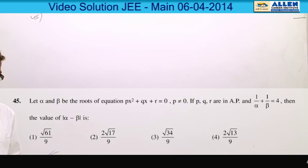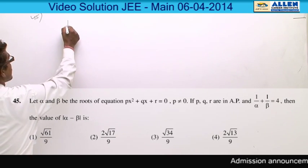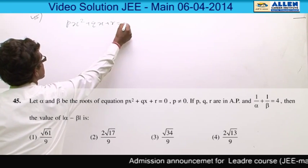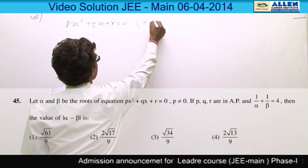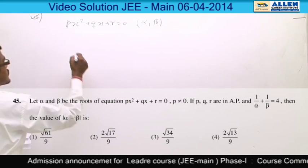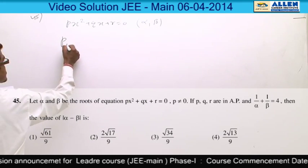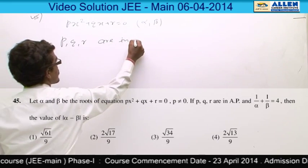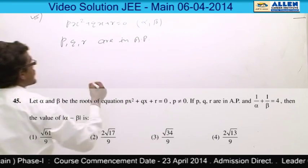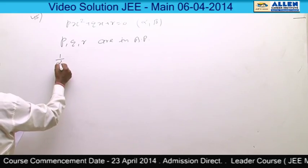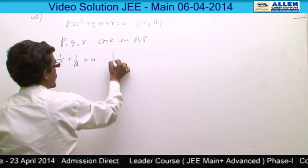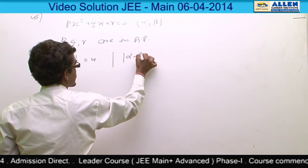Question number 45: a quadratic equation px² + qx + r = 0 has roots α and β. The coefficients p, q, and r are in AP, and 1/α + 1/β = 4. We need to find the value of |α - β|.